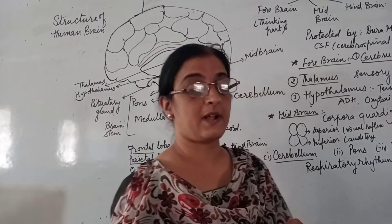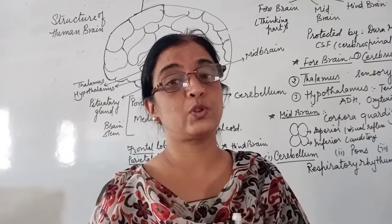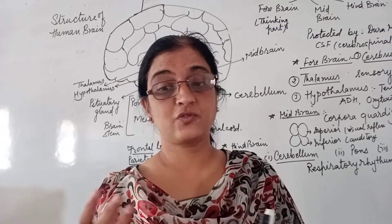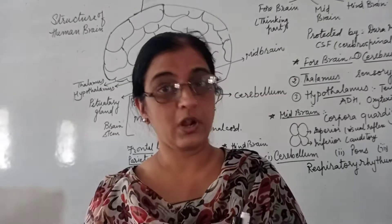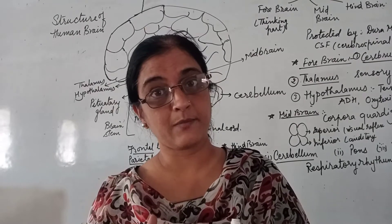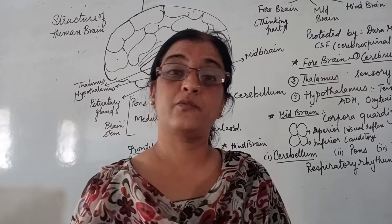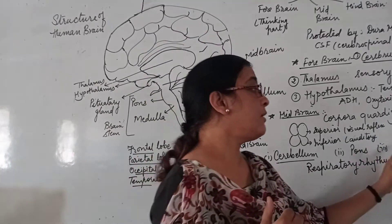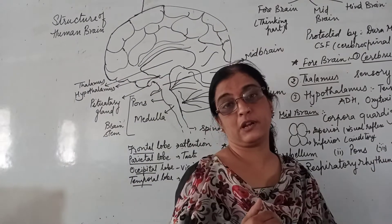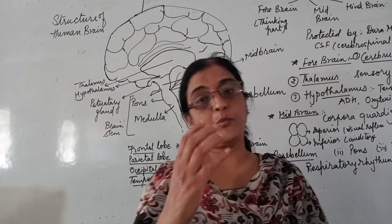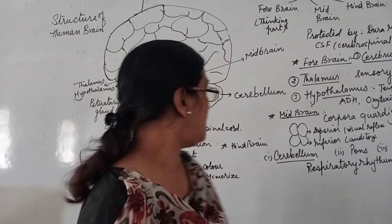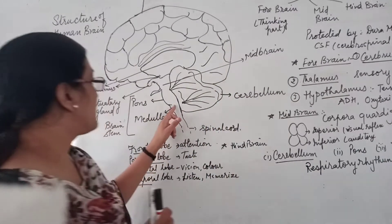Looking at the forebrain, there are four lobes. The four lobes are called the frontal lobe, parietal lobe, occipital lobe, and temporal lobe.